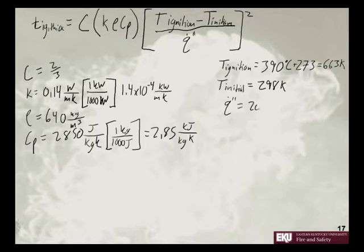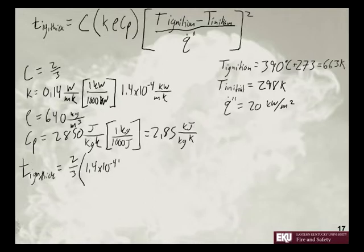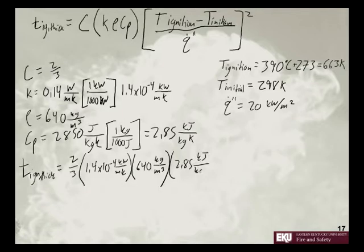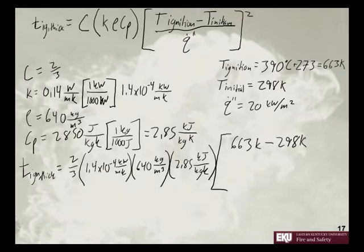Q dot dot prime is equal to 20 kilowatts per meter squared. Now we can plug all this in and say time ignition is equal to 2 thirds times 1.4 times 10 to the negative fourth kilowatts per meter Kelvin times 640 kilograms per meter cubed times 2.85 kilojoules per kilogram Kelvin multiplied by quantity of 663 Kelvin minus 298 Kelvin divided by 20 kilowatts per meter squared.